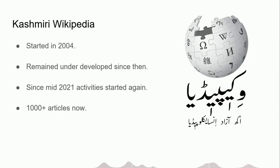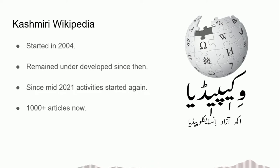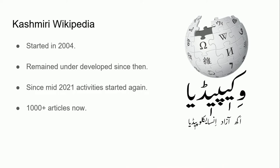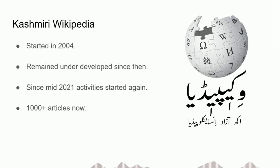If we talk about Kashmiri Wikipedia, it was started back in 2004 by some volunteers, but it had remained underdeveloped since then. There has been very little activity on this Wikipedia in past years. But since 2021, activities started to regain momentum and we finally managed to cross 1000 plus articles.